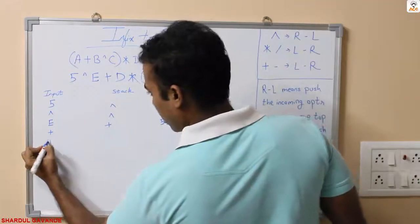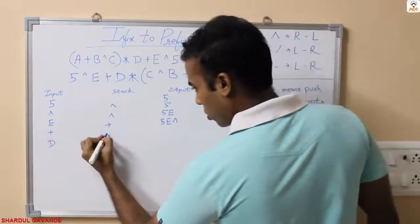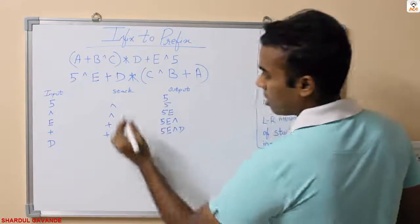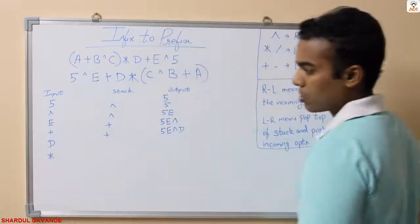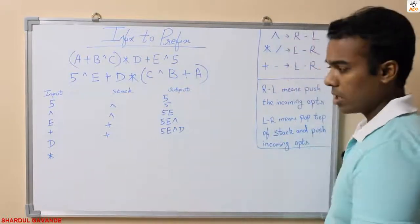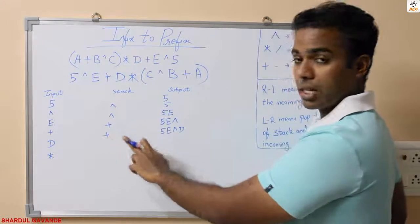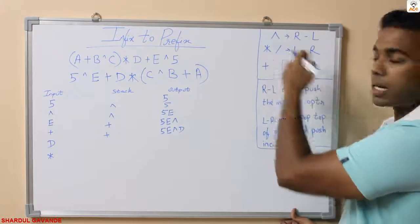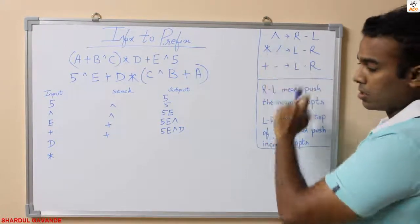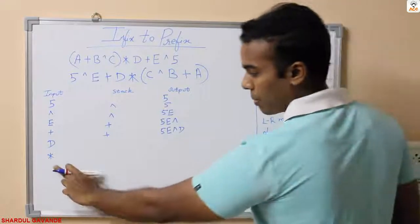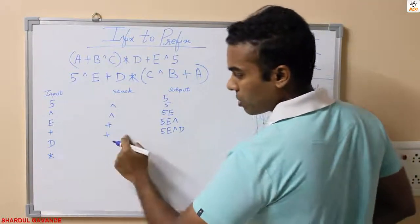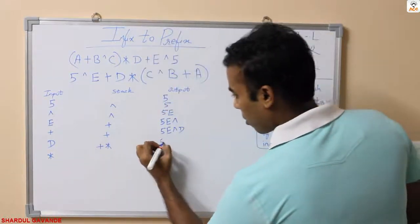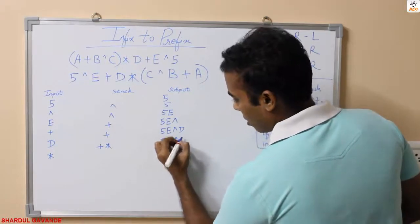Next I have D. D is a character, no change in stack — I will simply push it to the output. Next I have star. Star is an operator, so compare with the top element of the stack. Plus is lower priority and multiplication is higher priority, so the top element is not greater than the incoming operator. So we simply push star into the stack. Stack has plus and star, output has 5, E, power, and D.